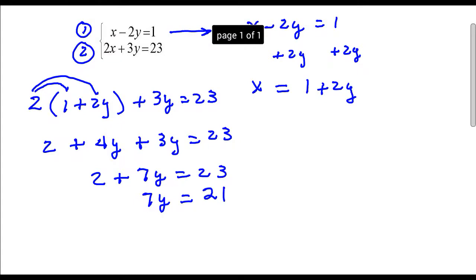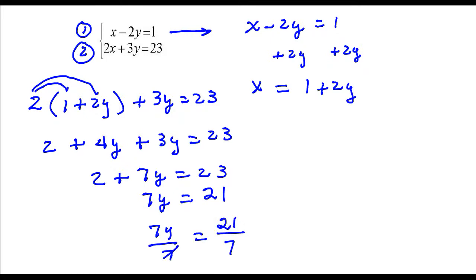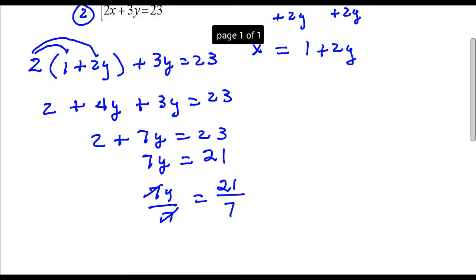And the last thing to get y by itself is just to divide both sides by 7. So y is 3.